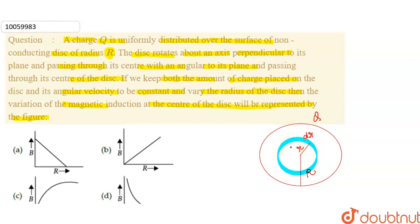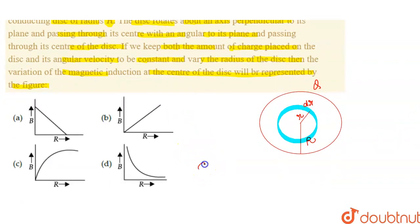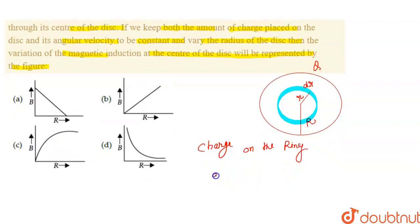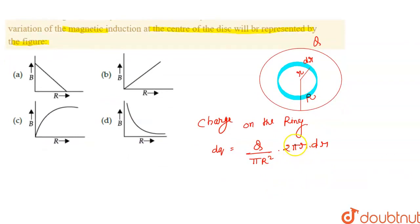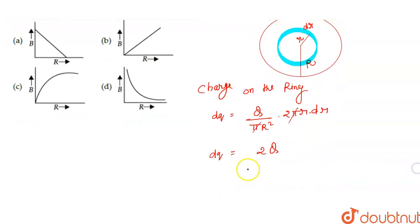Charge on the elementary ring: dQ is equal to Q upon pi R squared, into 2 pi r dr. So simplifying, this gives us dQ = 2Q r dr upon R squared.